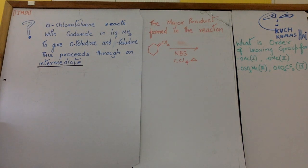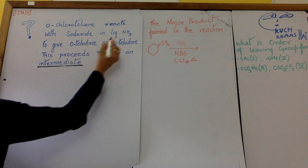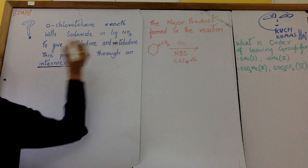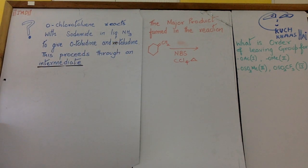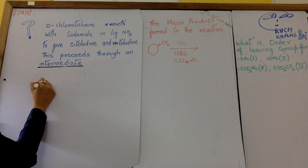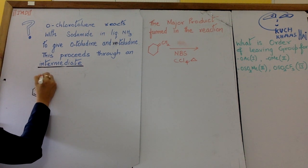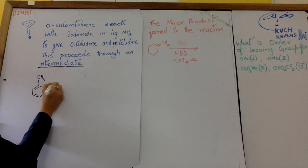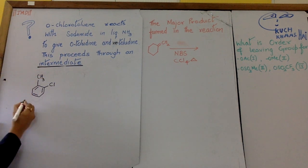Orthochlorotoluene reacts with sodium in liquid ammonia to give O-toluidine and M-toluidine. This proceeds through an intermediate. So let us make orthochlorotoluene first. Here we go, CH3 here, chlorine here. Orthochlorotoluene.